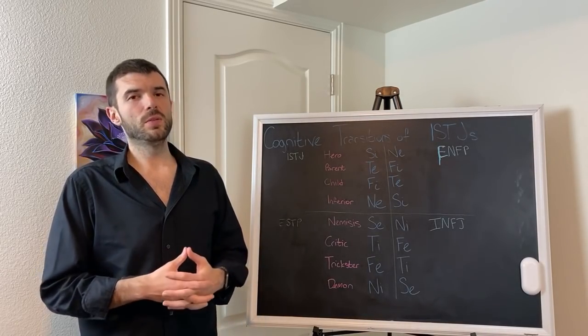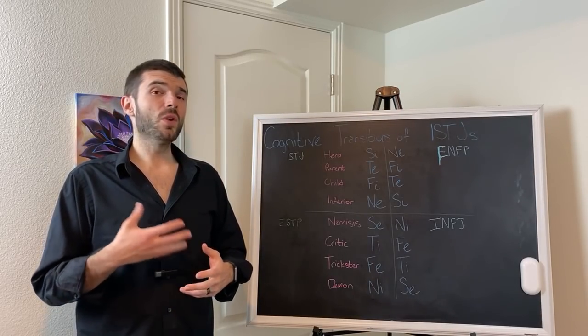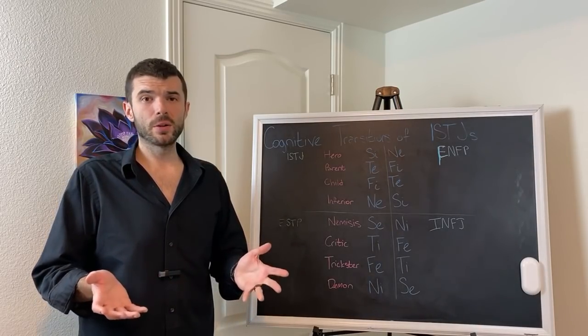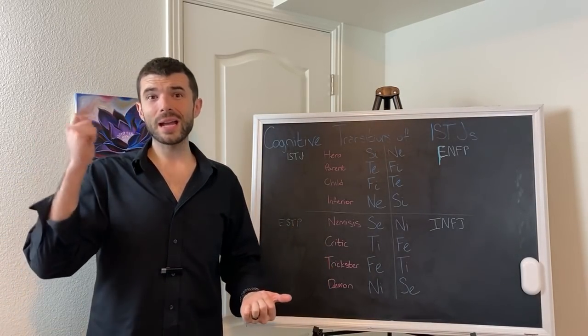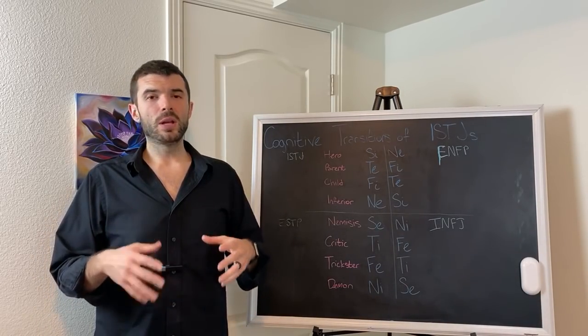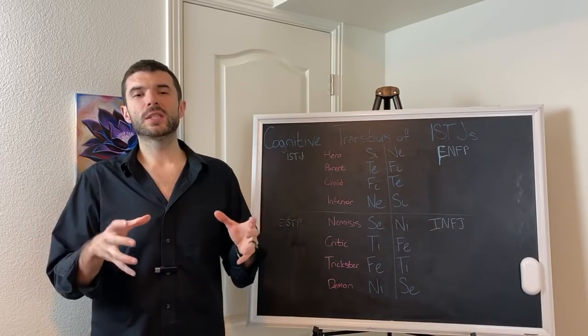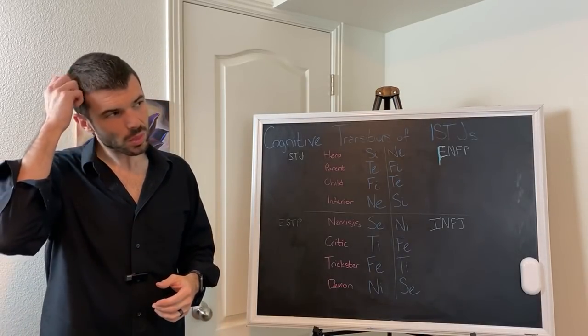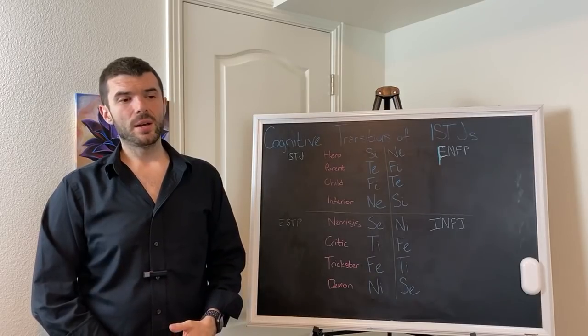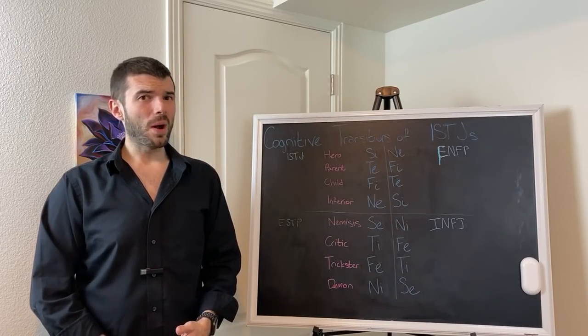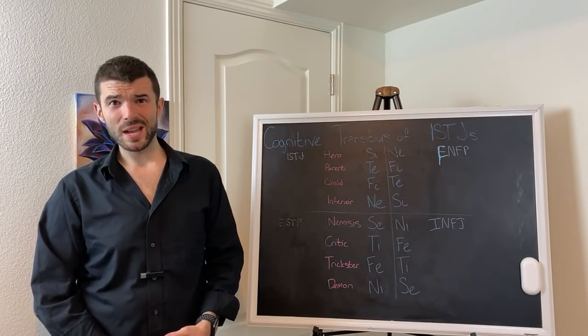Until they realize it is their duty to protect freedom of choice, their extroverted intuition inferior. When they do that, they end up penning and authoring things like civil disobedience. Henry David Thoreau is an ISTJ, and in my opinion, the most famous ISTJ. Please read his books, especially civil disobedience.